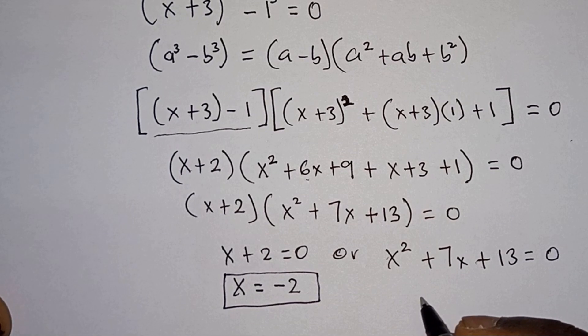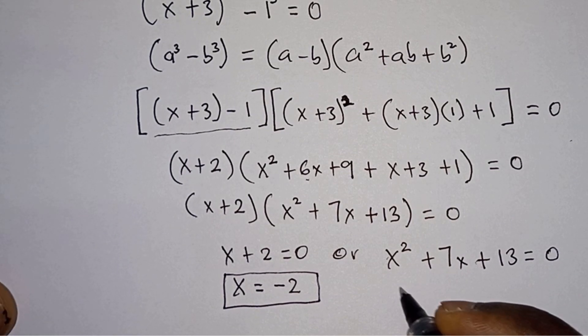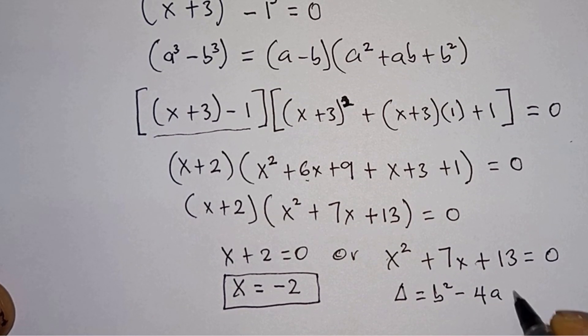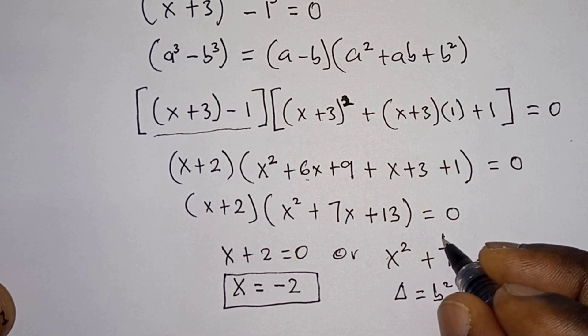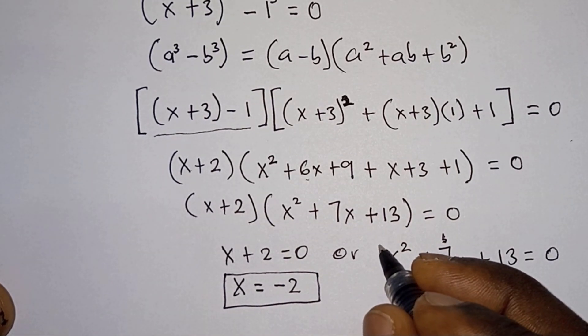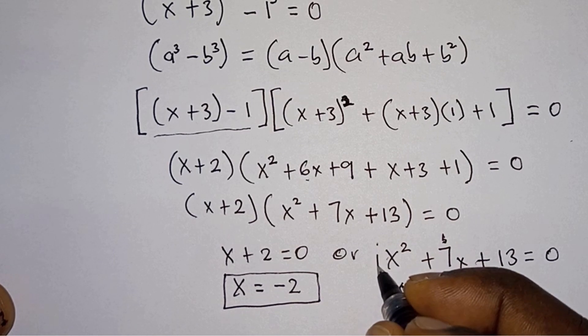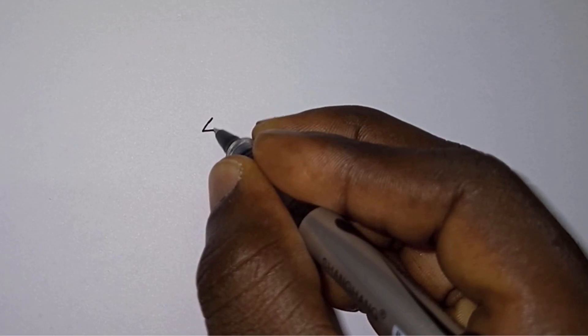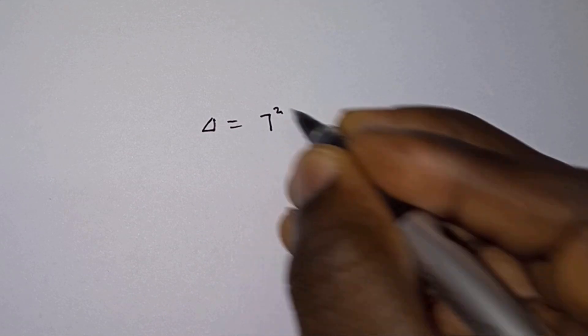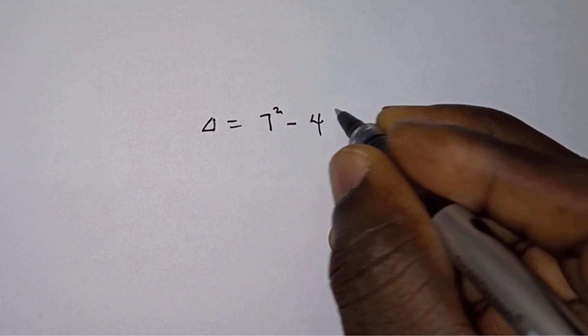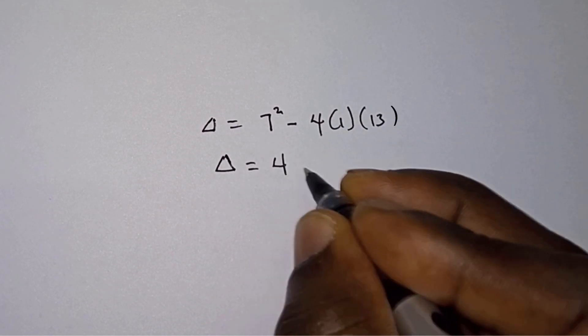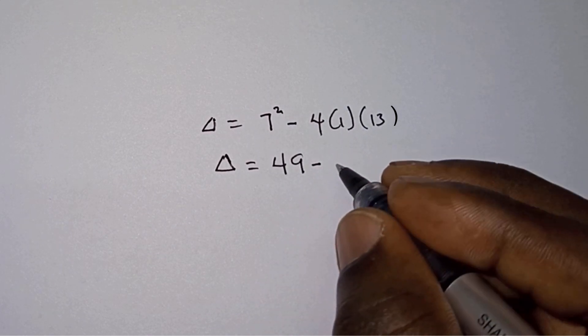Then from here we will just use the discriminant formula, which is Δ equals b² minus 4ac. b is the coefficient of x, and a is the coefficient of x², which is 1, then c is the constant 13. So let's put this into the formula. We have Δ equals 7² minus 4 times 1 times 13. So Δ equals 49 minus 52, and we are getting Δ to be minus 3.